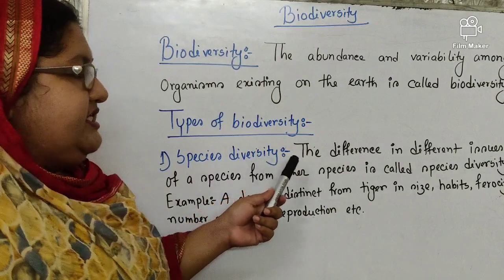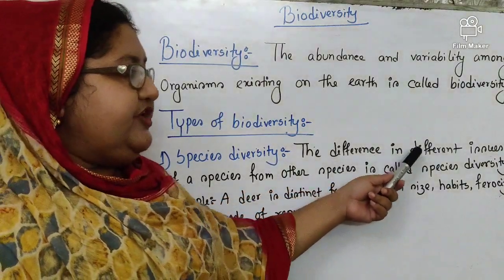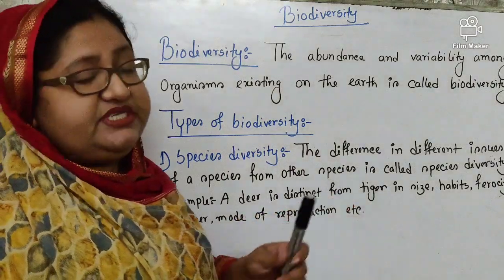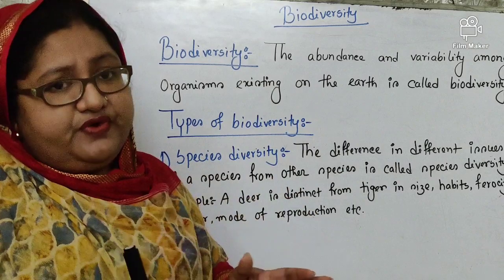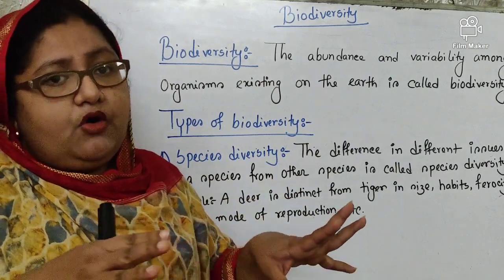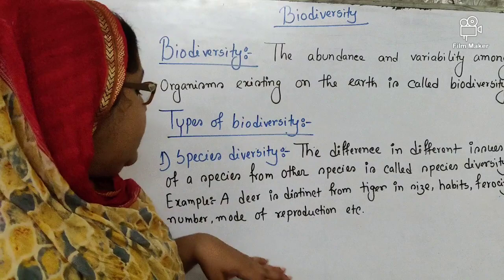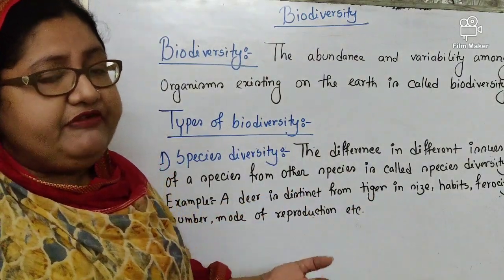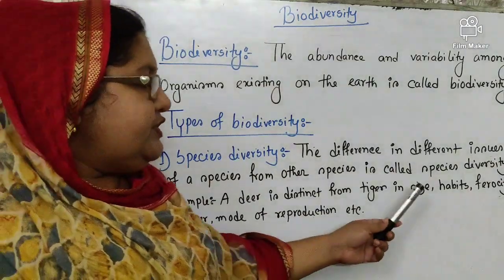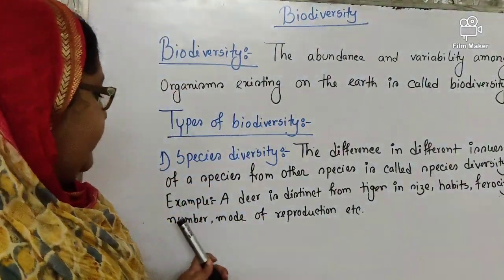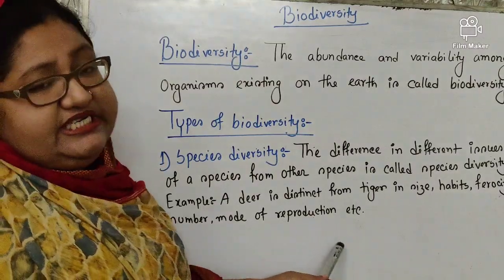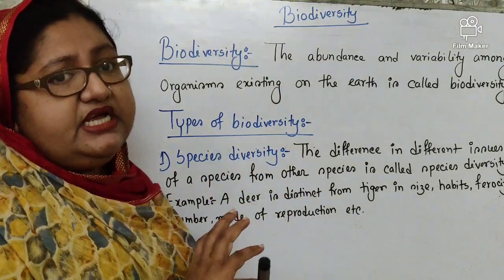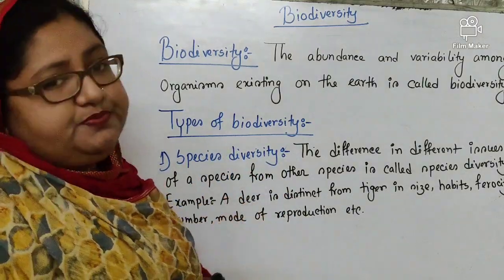What is species diversity? The difference in different issues of a species from other species is called species diversity. That means there are some differences between or among the species. For example, a deer is distinct from a tiger in aspects such as their size, habits, ferocity, their number, mode of departure, etc. So species diversity means the differences among the species.